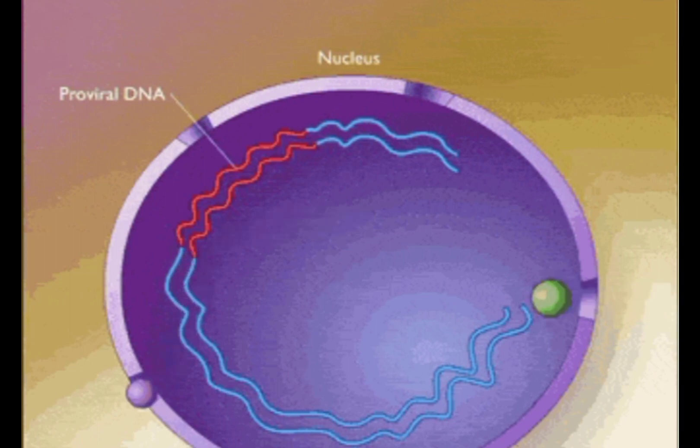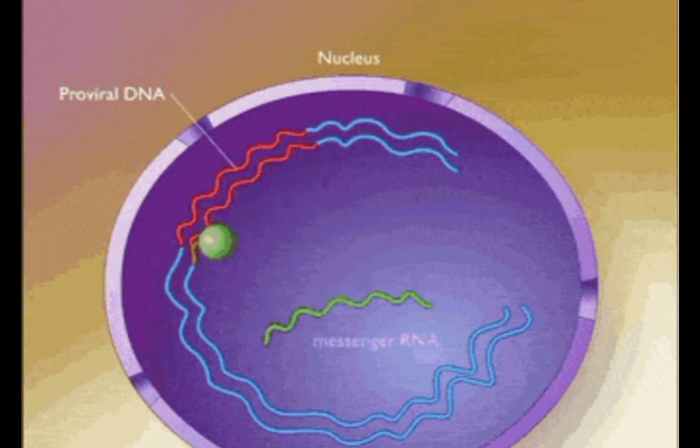It disappears during cell division and reappears afterwards. It is made up of different types of RNA and is responsible for synthesizing ribosomes.